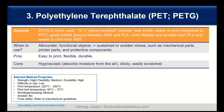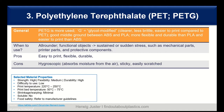Number four is thermoplastic elastomers, TPE. TPE is a broad class of copolymers — a soft and stretchable material that is not always easy to extrude. Within thermoplastic elastomers, we also have thermoplastic polyurethanes, TPU. TPUs are more rigid, which means they are easier to print, and they have good elasticity at low temperatures — making TPU more suitable for low-temperature applications. When to use? Applications that are bent, stretched, or compressed.